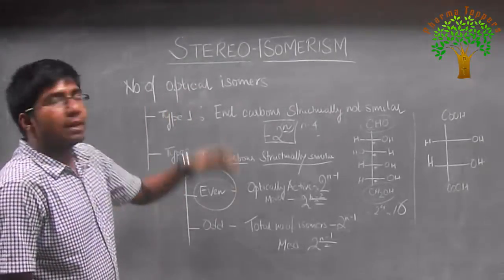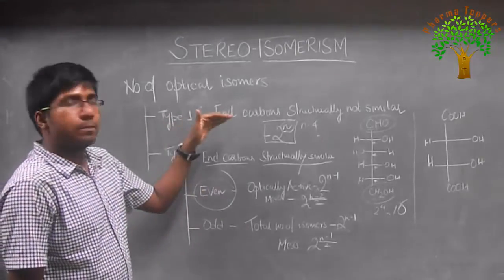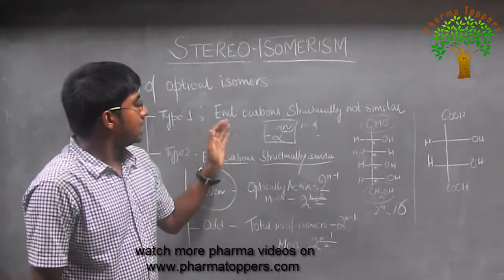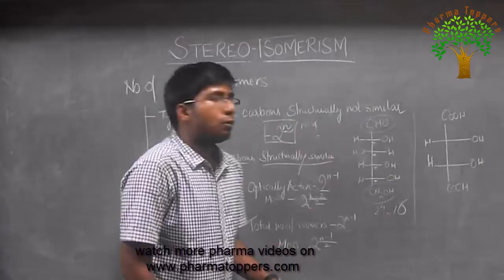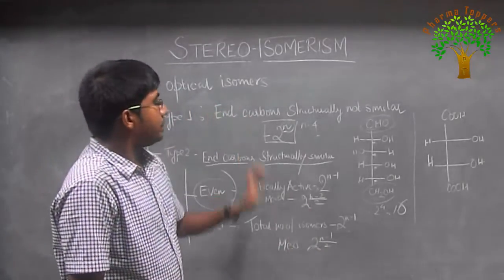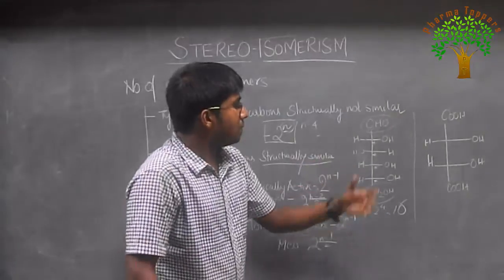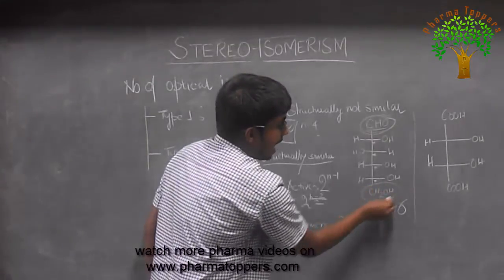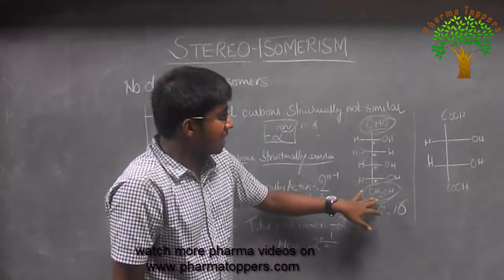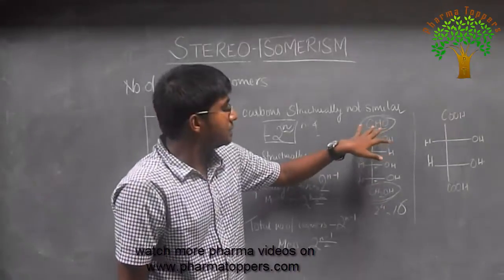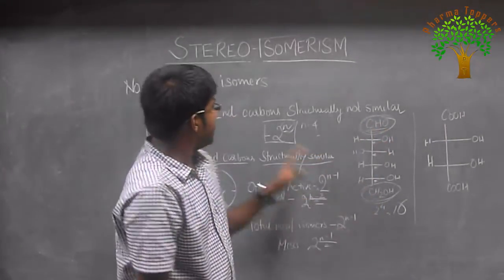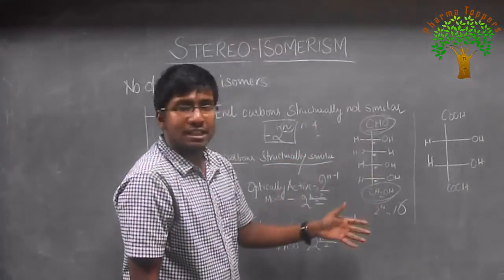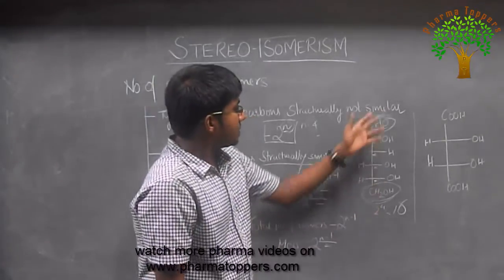For counting the number of optical isomers, we have two cases — a very simple case and a slightly more complicated one. The simple case is when the end carbons are structurally not similar. For example, this compound has an aldehyde group at one end and an alcohol at the other end, so the end carbons are not similar. This is a classical example of glucose, where you can see the end carbons are structurally not similar.